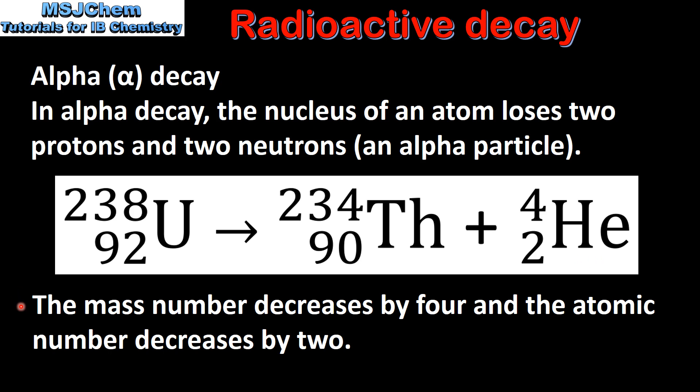From the nuclear equation we can see that the mass number decreases by 4 and the atomic number decreases by 2.